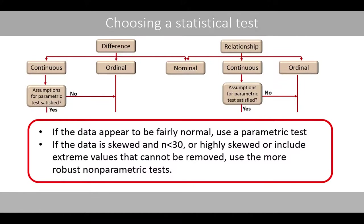In conclusion, if the data appears to be fairly normal, use a parametric test. If the data is skewed and the sample size is less than 30, or highly skewed, or includes extreme values that cannot be removed, use the more robust non-parametric tests.